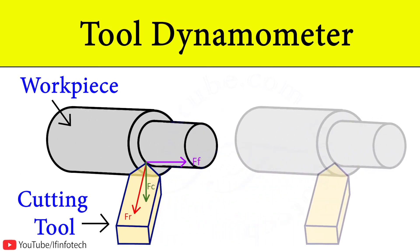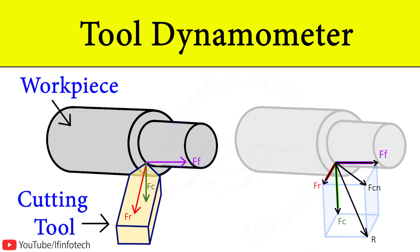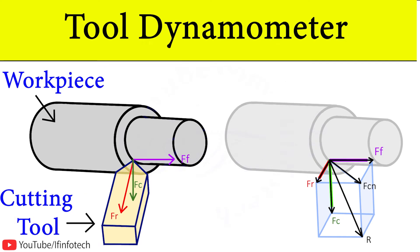In today's session, we will learn about tool dynamometer. This method is used to determine cutting force. Here the forces involved in oblique metal turning process are shown in figure.